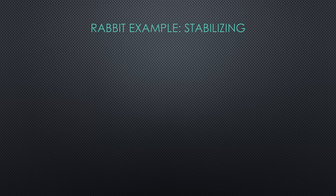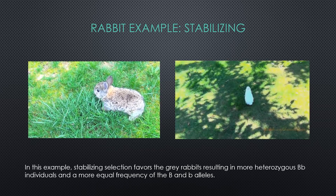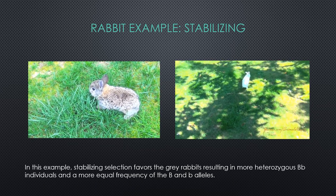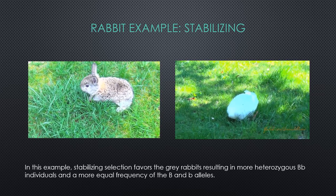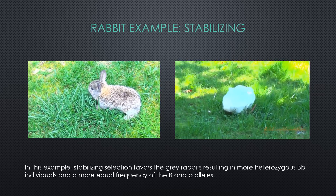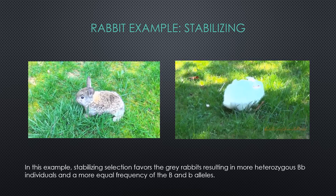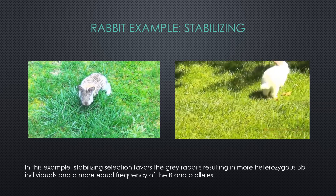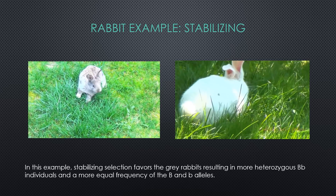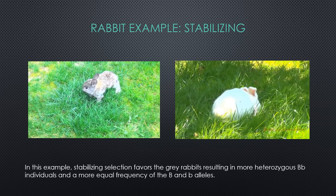As winter ends and spring begins, the selection pressures on our population also change. Now that the snow has melted, gray rabbits blend in better and survive longer, and the white rabbits no longer have the upper hand. This is an example of stabilizing selection because the big B little b gray rabbits are selected for, resulting in an increase in the frequency of the big B little b genotype and a more equal allelic frequency of big B and little b.